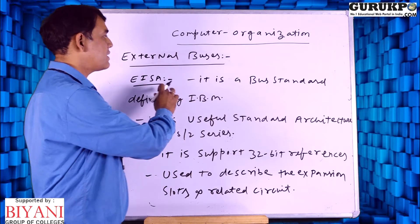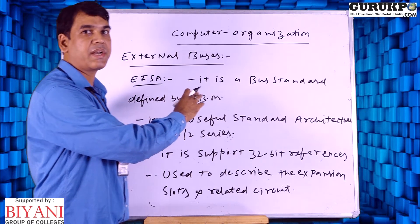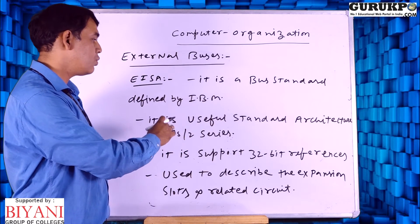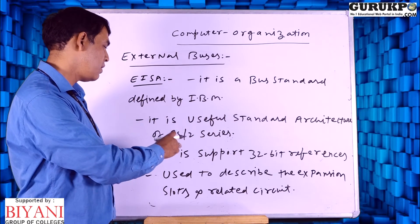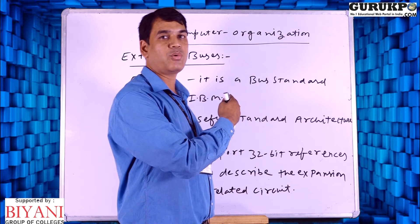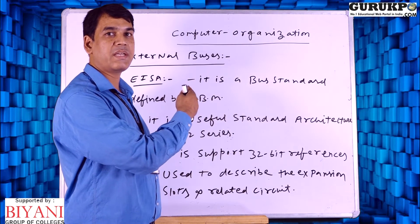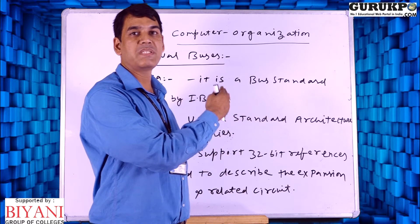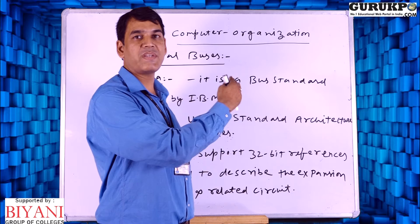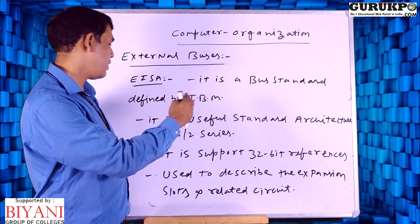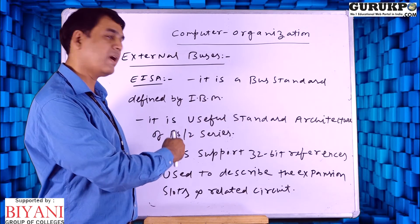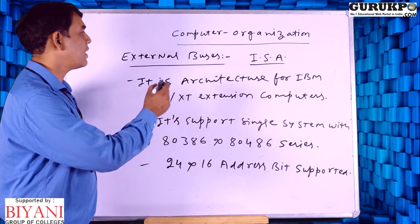Let us discuss about EISA. It is a type of bus architecture defined by IBM — International Business Machines — which basically defines the standard architecture for PS2 series computers. It uses 32-bit references inside this architecture. EISA also describes the expansion slots and related circuits defined in the EISA standard architecture.